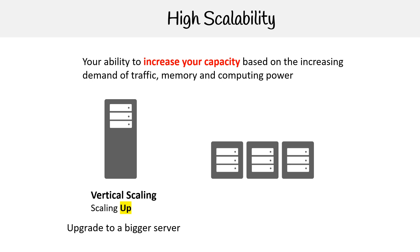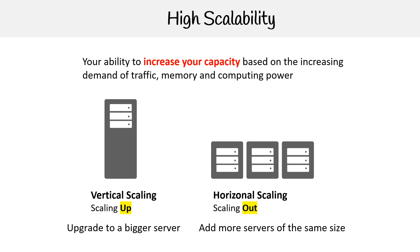Another way to scale is called horizontal scaling, and this is where you scale out — you're adding more servers of the same size. So that's vertical scaling and horizontal scaling: you need to know scaling up and scaling out. That is the general concept of high scalability.